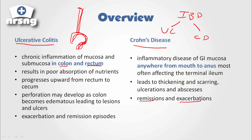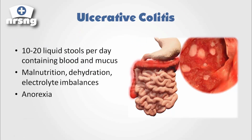Now let's dive in a little bit more and get a bigger picture of what's going on with ulcerative colitis. Remember, ulcerative colitis involves the rectum and cecum, and what it is is this inflammation — you see this redness along the bowel. What can happen is it can lead to 10 to 20 liquid stools per day that contain blood and/or mucus. Because of these multiple liquid stools, our big concern is malnutrition, dehydration, and electrolyte imbalances.